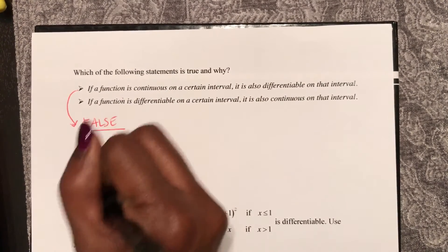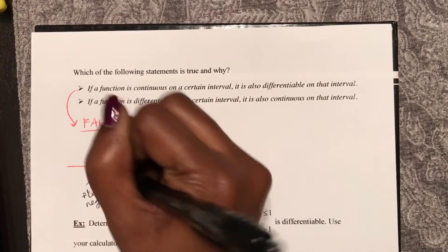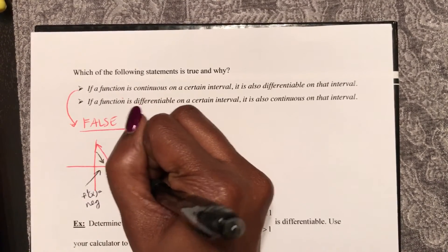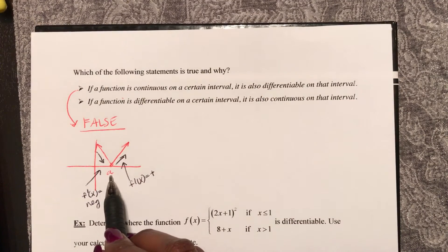So therefore here on this side, f prime of x is a negative number, and on this side f prime of x is a positive number. So therefore we cannot differentiate at a.